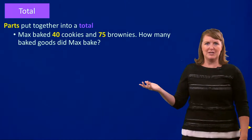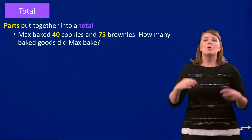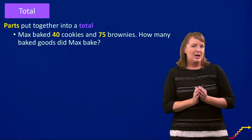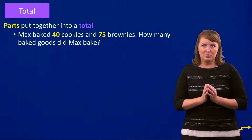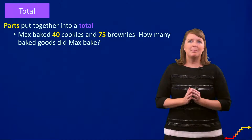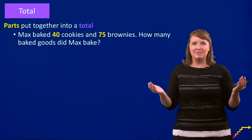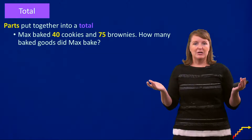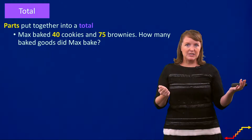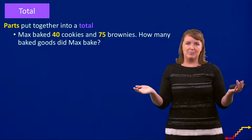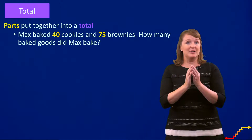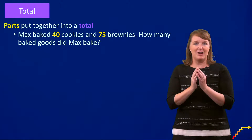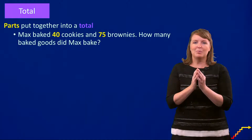So what is the total schema? In the total schema, we have parts that are put together for a total. Your classic total story is this: Max baked 40 cookies and 75 brownies — how many baked goods did Max bake? So there we have a cookies part and a brownies part, and the question is asking us to figure out the total of baked goods. So that is a total problem.